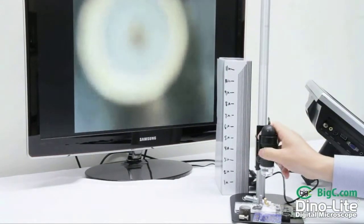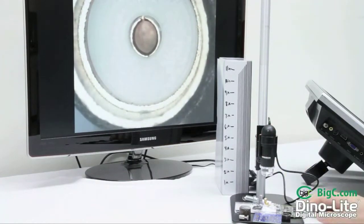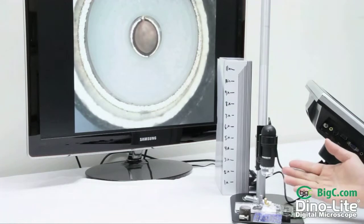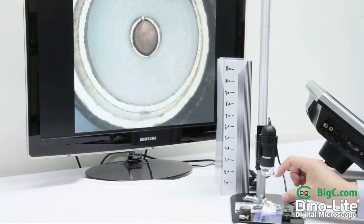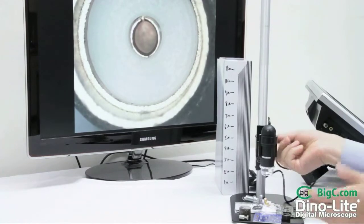In order to zoom in, all we have to do is put the scope closer to the object and then refocus. All the refocusing is fast, it's easy. We can go all the way down to 92 times the magnification and we do not need to change any lens whatsoever.